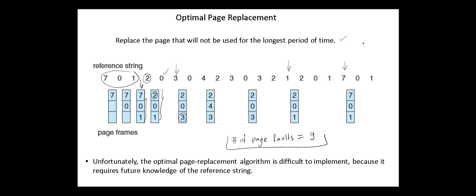For the same string, the number of page faults with first-in-first-out was 15. Optimal page replacement is difficult to implement because it requires future knowledge of the reference string, and this is similar to the shortest-job-first scheduling. The results in both algorithms are optimal but they are difficult to implement. It is used as a benchmark for the comparison and evaluation of proposed new algorithms.